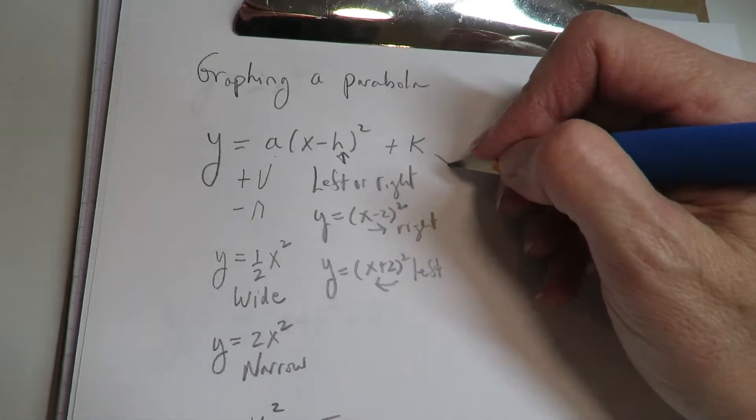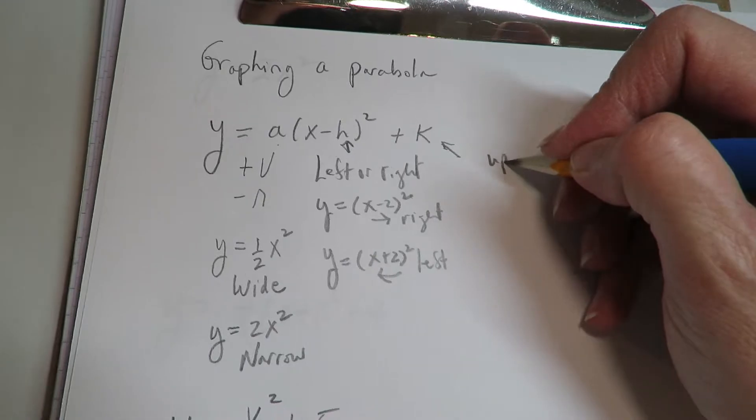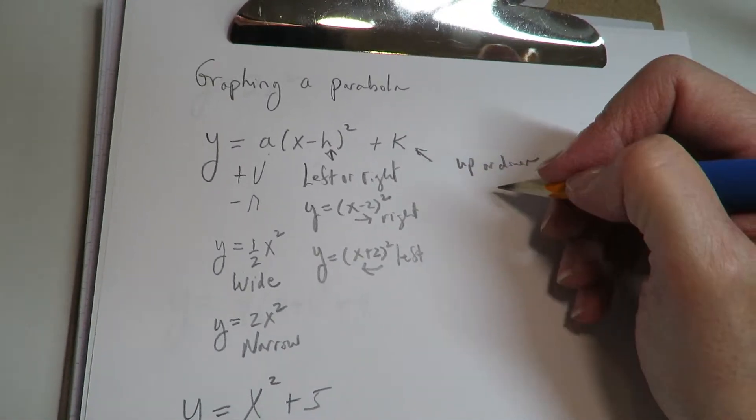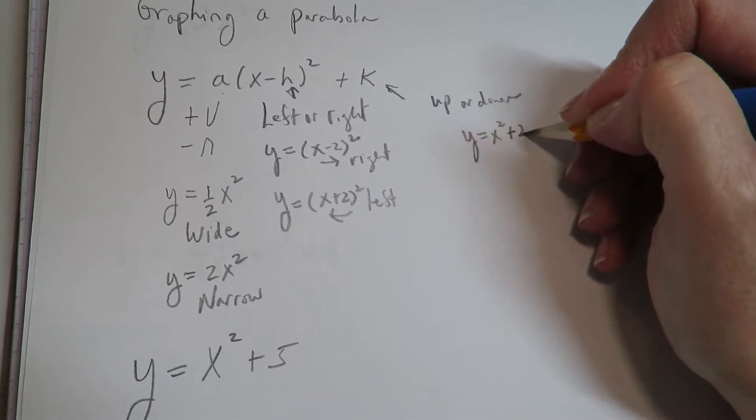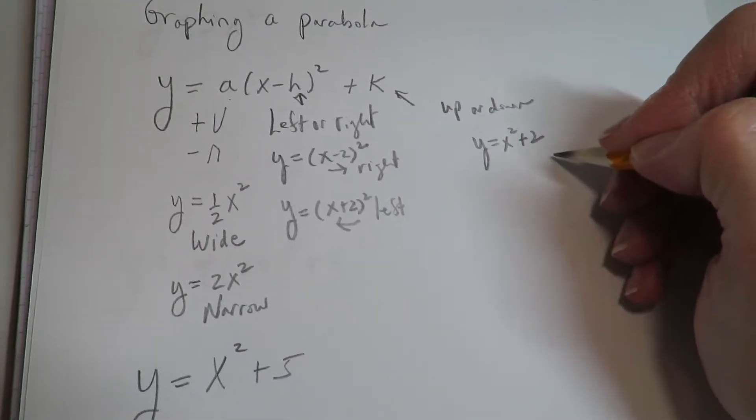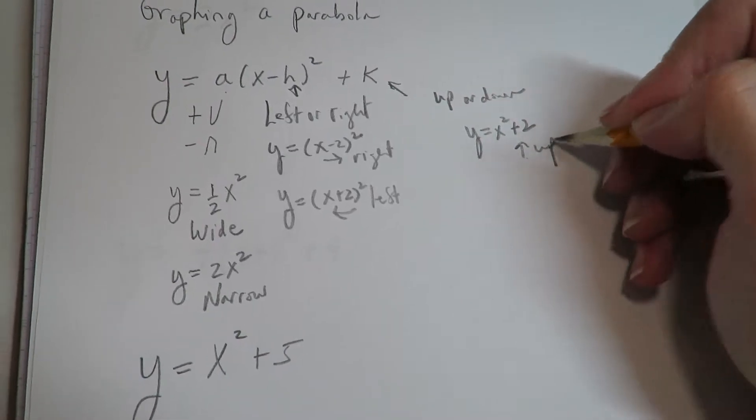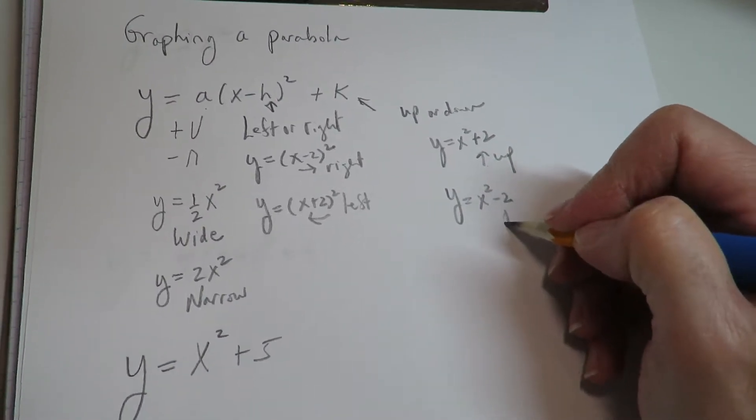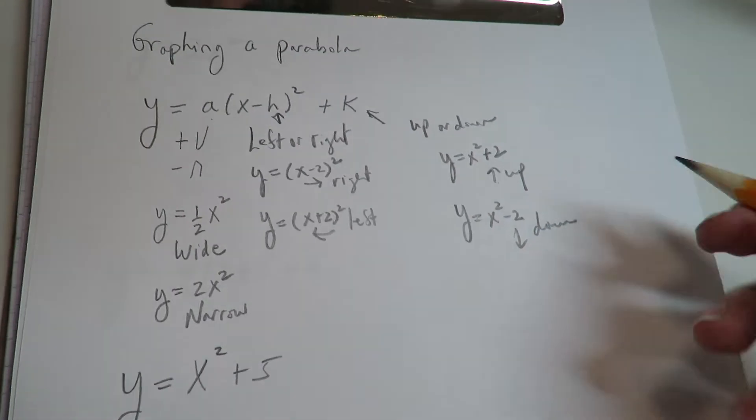And then the k on the end is your up, down. If it's positive, then you're going up. If the number added is negative, then you're going down.